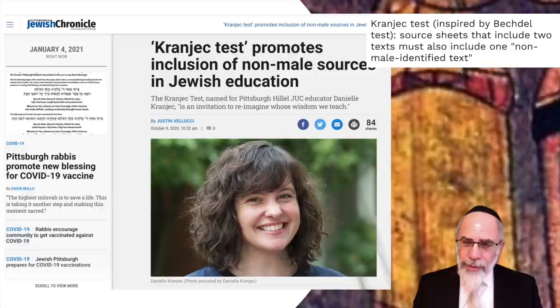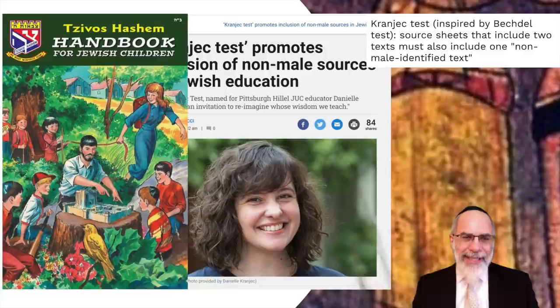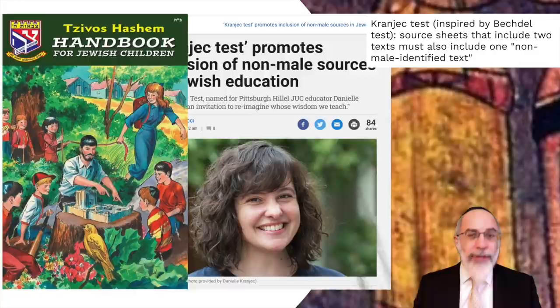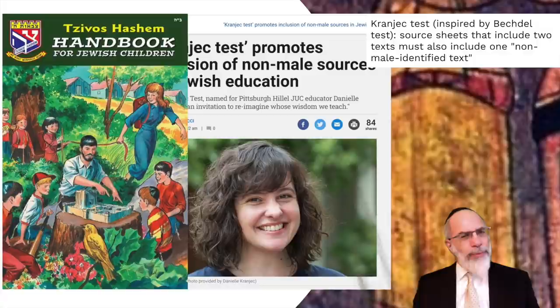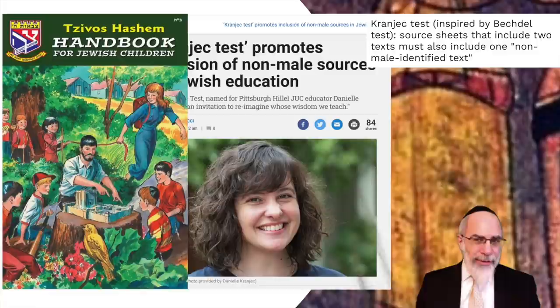The Lubavitcher Rebbe, who we've mentioned in other contexts, was especially noted for insisting that in any children's book portrayals, such as this Tzivos Hashem handbook for Jewish children, if there is a male child portrayed, there should always be a female child portrayed as well. This has pushback in all sectors of the Jewish population, and it's just another example of the Kranjek Test expressing itself culturally.